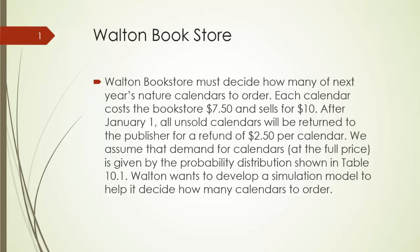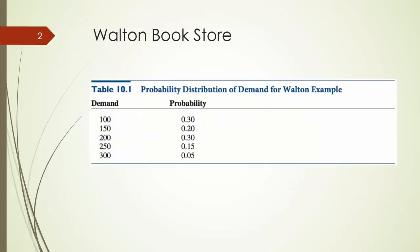Wharton wants to develop a simulation model to help decide how many calendars to order. In this table, we see that there is a 30% chance the demand will be 100 copies, 20% chance the demand will be 150, 30% chance the demand will be 200 copies, 15% chance the demand will be 250 copies, and 5% chance the demand will be 300 copies.